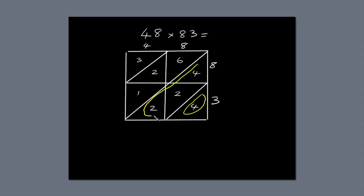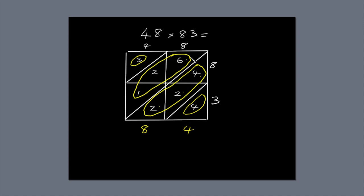Next, add up the numbers along the diagonals: 4; 4 plus 2 plus 2 is 8; 6 plus 2 plus 1 is 9; 3. Now read off the answer: 3, 9, 8, 4. 48 times 83 equals 3,984.